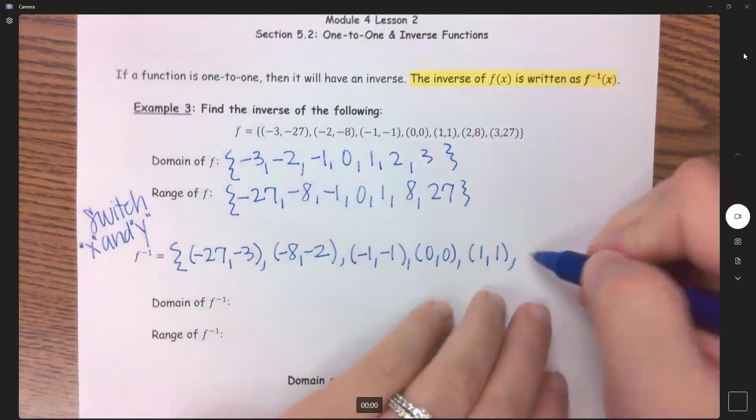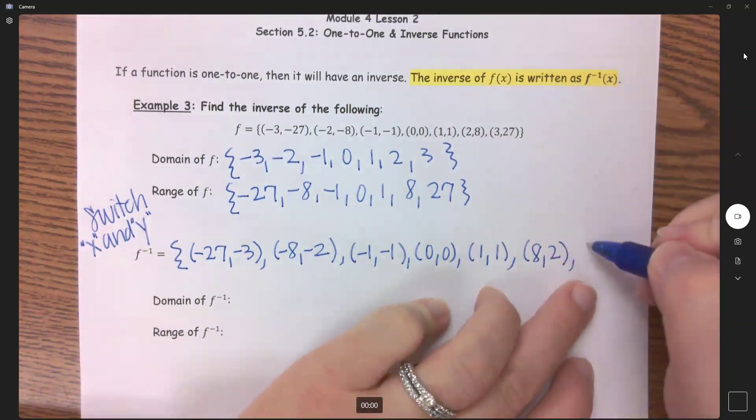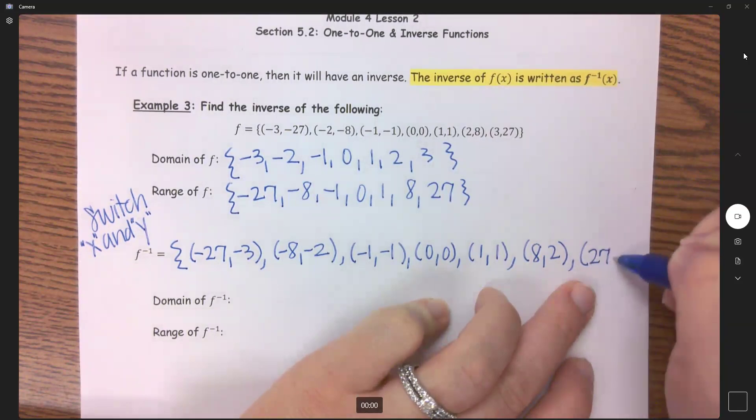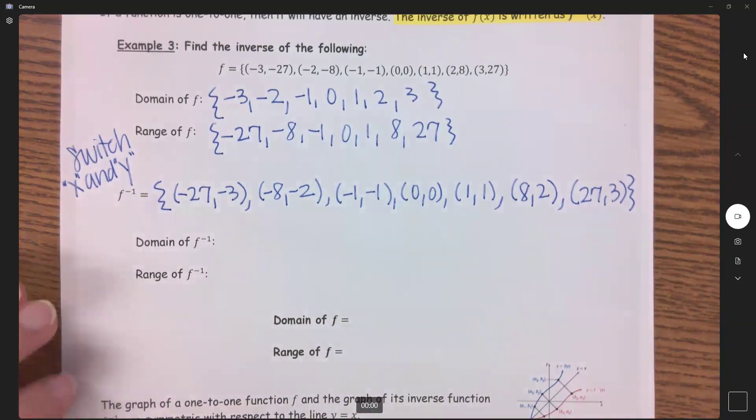And now 2, 8 becomes 8, 2, and 3, 27 becomes 27, 3.